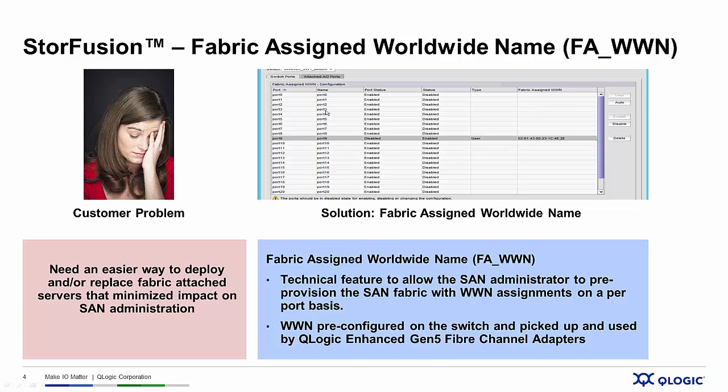What if Sarah could configure all the storage and switch hardware, and even zone the fabric without having the servers on hand? That's exactly what Fabric Assigned Worldwide Name functionality provides. With Q-Logic Enhanced Gen5 fiber channel adapters and the Brocade Gen5 fiber channel fabrics, Sarah and her team can pre-configure worldwide names within the Brocade switches at the port level without even knowing what the worldwide name of the physical adapter is.